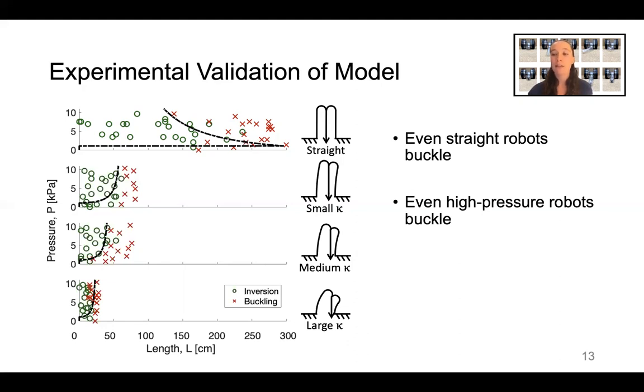Finally, we see that across all pressures and curvatures, below a certain length, the robot inverts successfully, and above that length, it buckles. The key observation is that at any pressure and curvature, zero-length robots do not buckle. This fact is what we will exploit in our solution to the buckling problem.